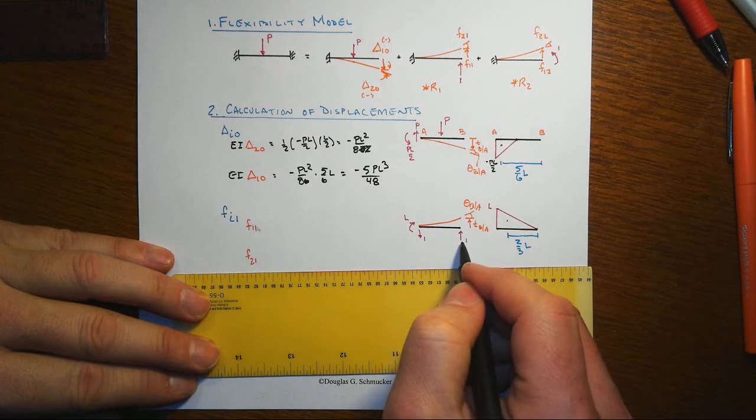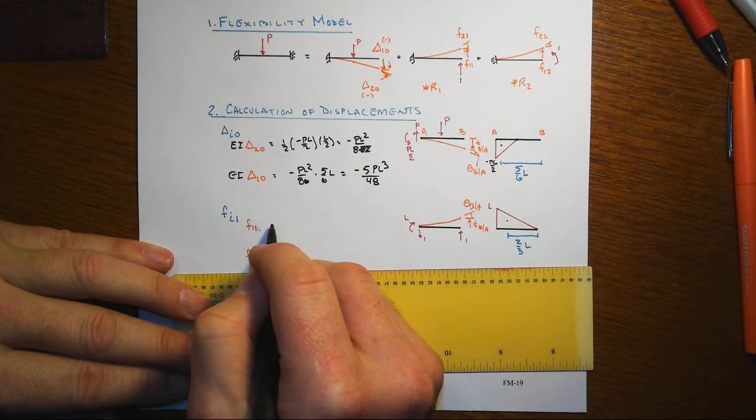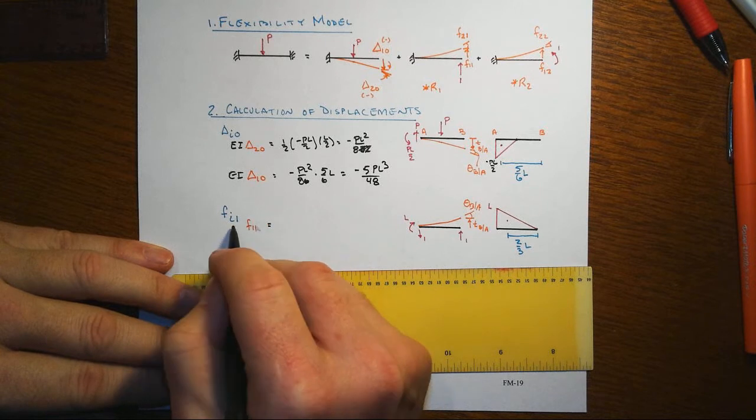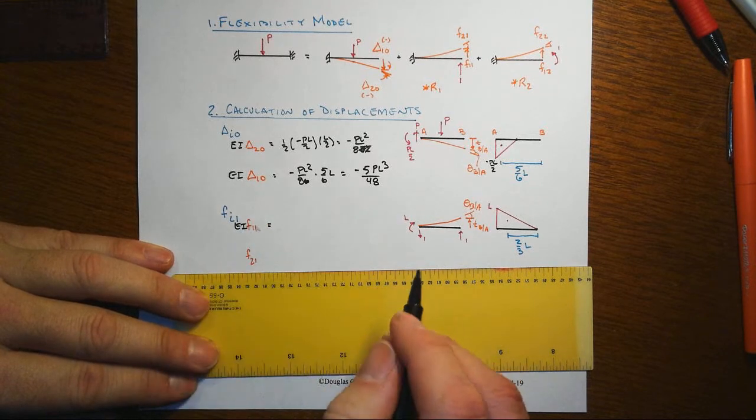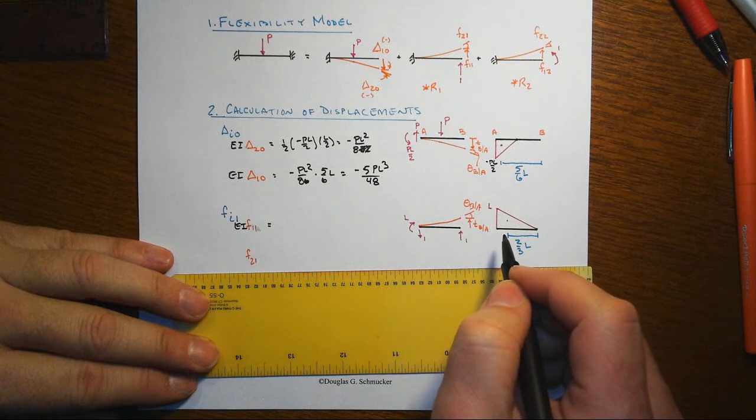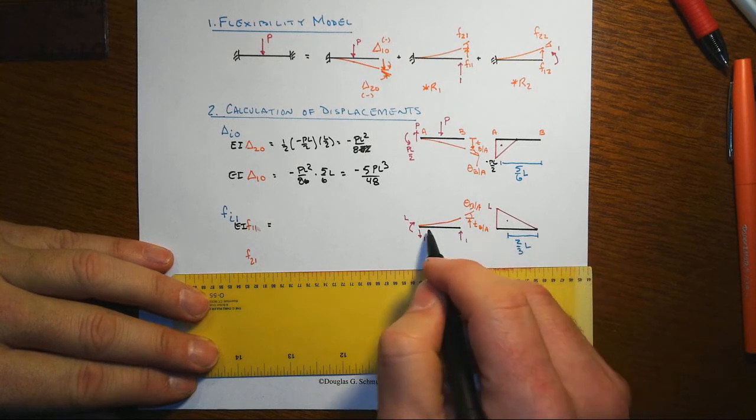We know this one actually pretty well here, that a cantilever with constant EI and a load out at the tip is going to end up having a PL cubed over 3EI kind of business going on here.